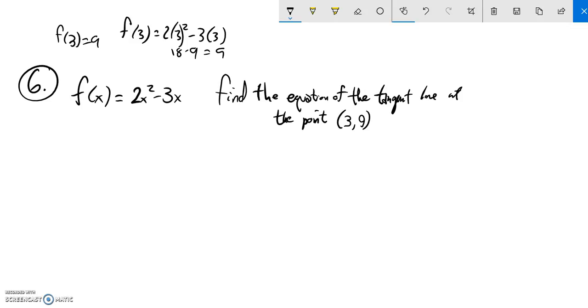So this is some shape, whatever it looks like, and at the point (3,9) I have some line that's tangent to it. I want the equation of that line. So notice what I'm going to need. I know a point on that line, (3,9), so that helps me.